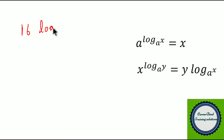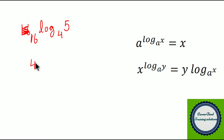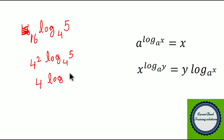Next question: 16 power log of 5 to the base 4. We write 16 as 4 square, so we have 4 square to the power log of 5 to the base 4. This can be rewritten as 4 power log of 5 squared to the base 4, and 5 squared is 25. So we have 4 power log of 25 to the base 4, which is in the format A power log X to the base A, equal to X. Therefore the answer is 25.